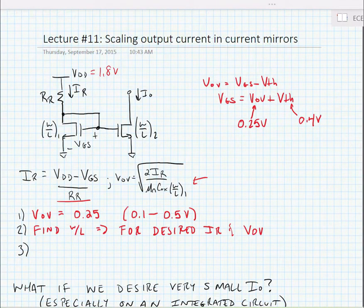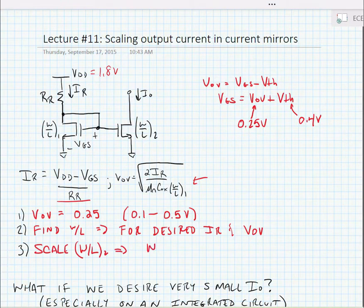If we want the output current to be different than the reference current, we could scale W over L2 relative to W over L1. And what we mean by this is we would make W over L2 equal to N times W over L1.